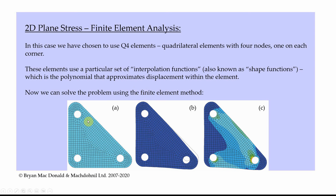When we solve it, the problem is broken up into smaller subdomains called finite elements. These finite elements are given a prescribed behavior based on the partial differential equation and the shape functions. We solve at the points which join the elements together — the nodes — and that gives us a list of the displacement of each node. We can graphically manipulate that list to give us the deformed shape, and we can further process that to work out the stress in the plate at all nodes and elements.